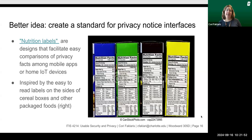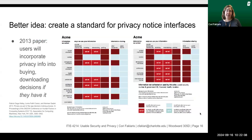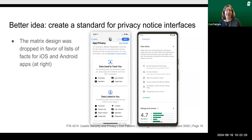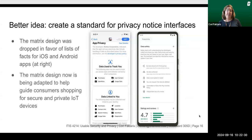Nutrition labels are designs that facilitate easy comparisons of privacy facts among mobile apps or home IoT devices. They are inspired by the easy-to-read labels on the sides of cereal boxes and other packaged foods. A 2013 paper found that users will incorporate this privacy information into their buying and downloading decisions if they have it. The matrix design from earlier was dropped in favor of lists of facts for iOS and Android apps, which fit more easily on a mobile screen. The matrix design is now being adapted to help guide consumer shopping for secure and private IoT devices.